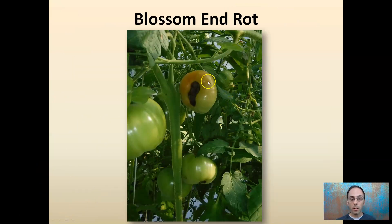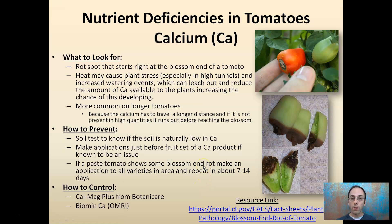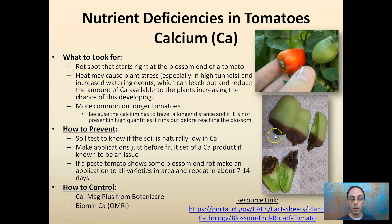Here we have blossom end rot in tomatoes — that's that sunken, darkened region here, also occurring on this fruit down here. This is a calcium deficiency. Speaking particularly to calcium deficiency, it's a rot spot that tends to start towards the blossom end. This can occur typically in tomatoes that are longer, because the calcium basically runs out before it gets to the end, and that's why you get the rotten appearance.